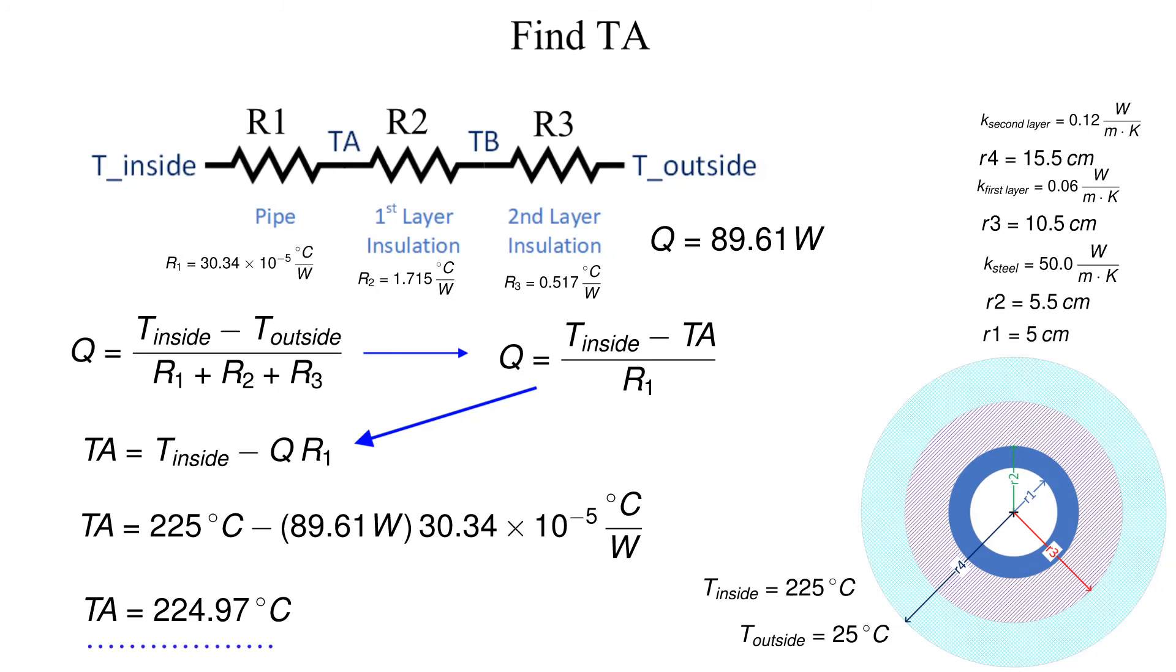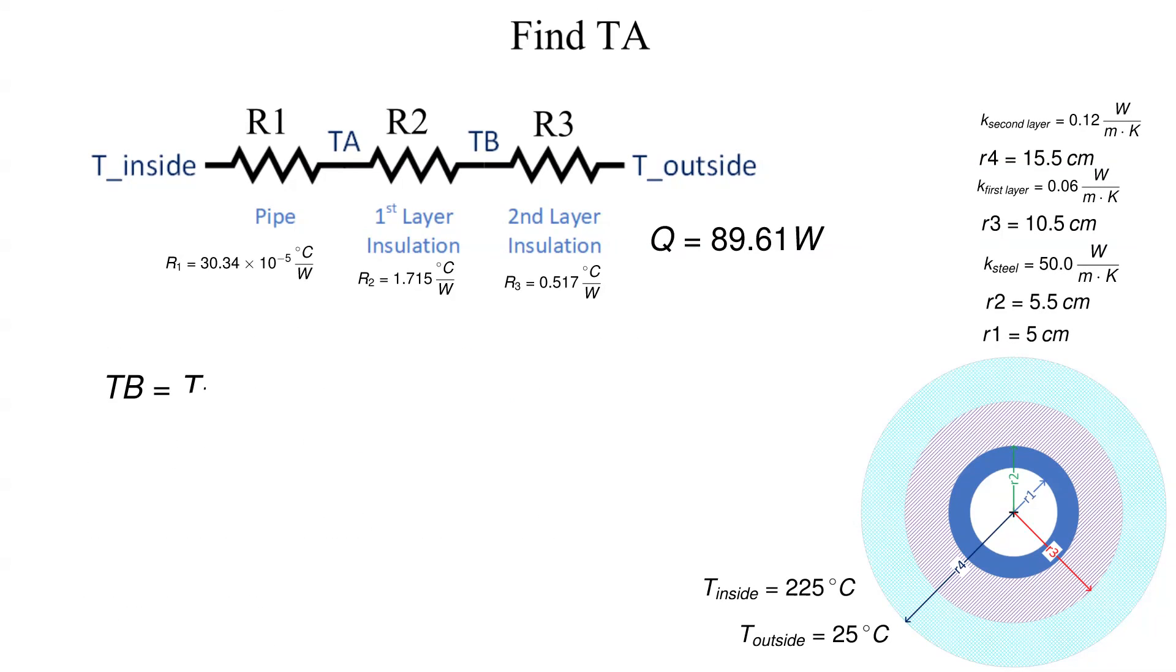Now we repeat that process to find the intermediate temperature between the two layers of insulation, denoted as TB. TB is equal to 71.29 degrees Celsius.